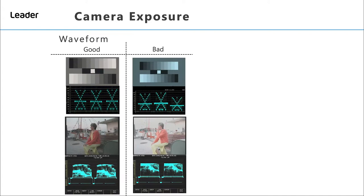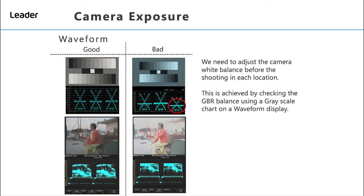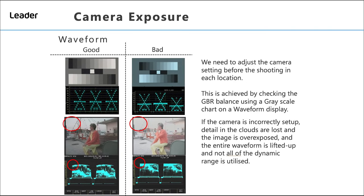Let's take a look at how we use a waveform display in a production environment. Here we have two camera setups: on the left a correctly exposed camera, and on the right a camera that has been overexposed. We need to adjust the camera white balance before shooting in each location, achieved by checking the GBR balance using a grayscale chart on a waveform display. If the camera is incorrectly set up, details of the clouds are lost, the image is overexposed, and the entire waveform is lifted up so not all of the dynamic range is used.